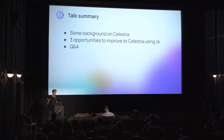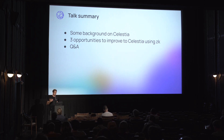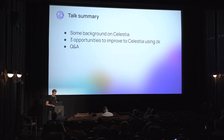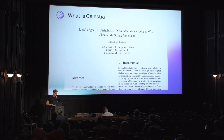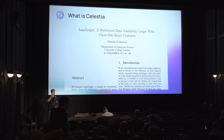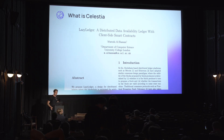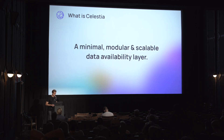Quick summary: I'll talk a bit about the background of Celestia that's relevant to understand some of these improvements, and then I'll go into each one of them. I'm only highlighting three — there are actually more, and there are lots of different ways we want to improve Celestia. The origin of Celestia is this white paper called Lazy Ledger, published in 2019 by our co-founder Mustafa.